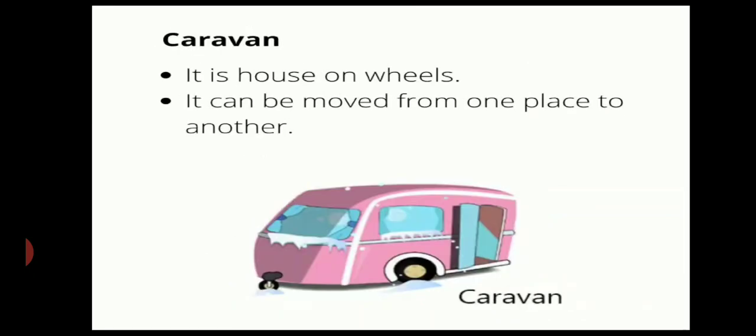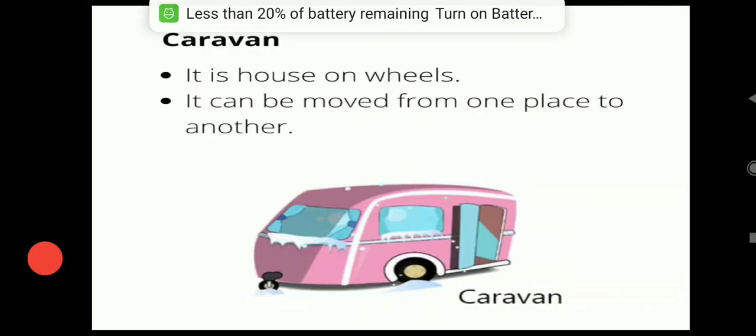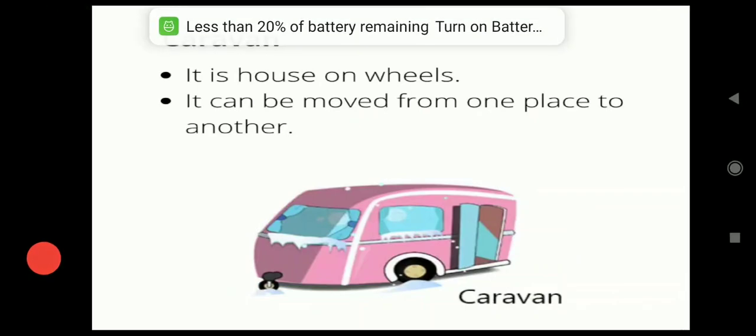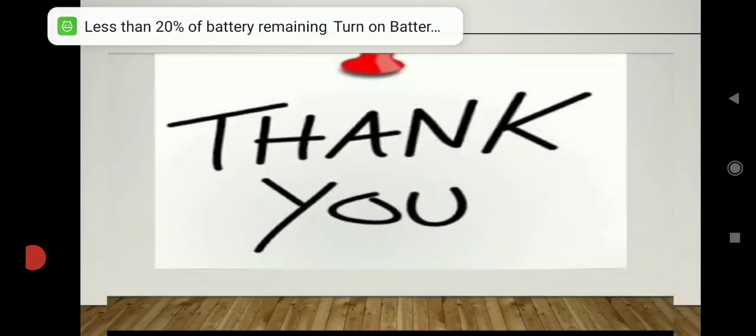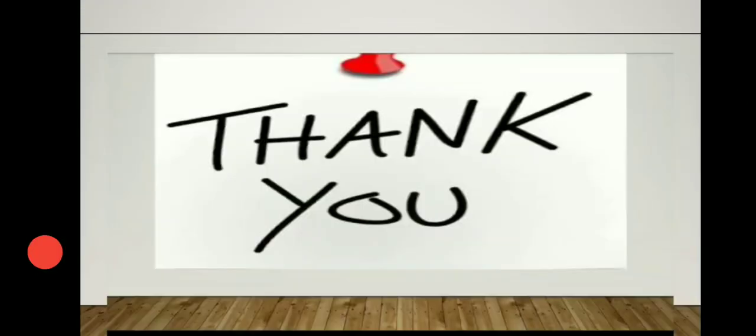Caravan. It is a house on wheels. It can be moved from one place to another. A group of travelers on camel is also known as a caravan. This is seen in the desert. Thank you.